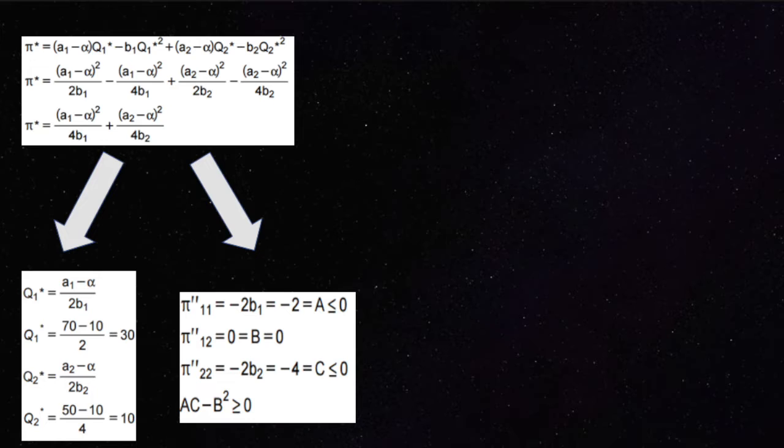We can now give values to the Q asterisk. As a result, we get the point (30, 10).